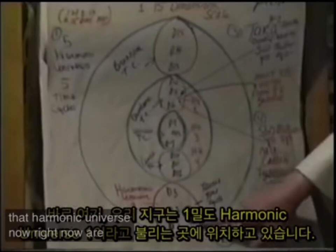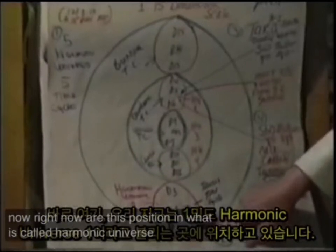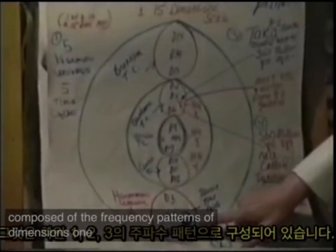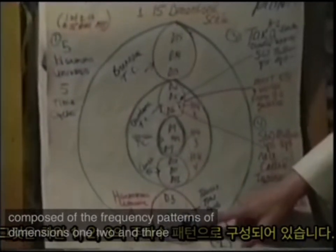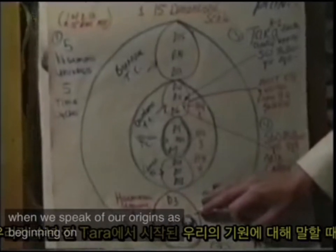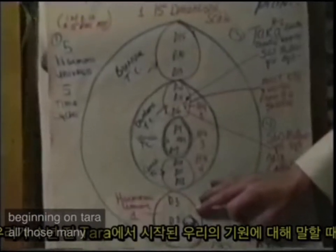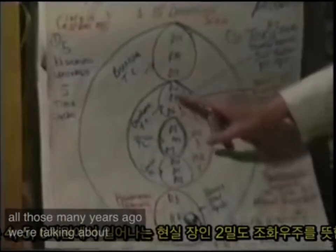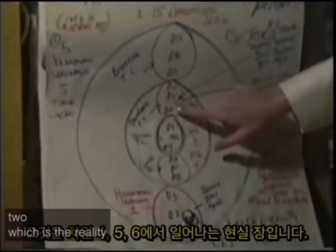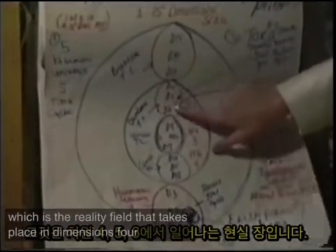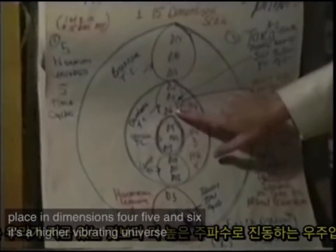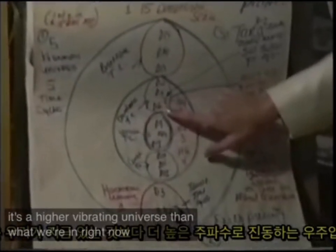Right now, our Earth is positioned in what is called harmonic universe 1, composed of the frequency patterns of dimensions 1, 2, and 3. When we speak of our origins as beginning on Tara, all those many years ago, we're talking about harmonic universe 2, which is the reality field that takes place in dimensions 4, 5, and 6 — a higher vibrating universe than what we're in right now.